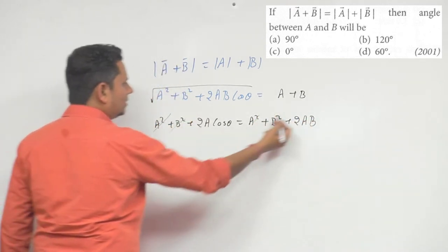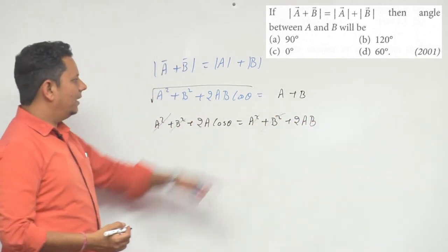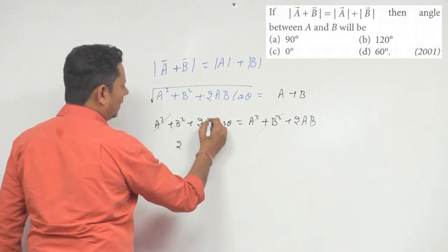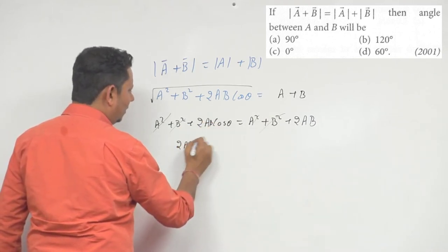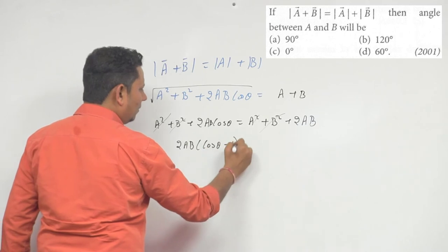Now, A square, A square, B square, B square will get cancelled. Usko agar ham idar lea hain, so it will be 2AB cos theta minus 1 equal to 0.